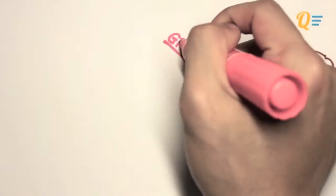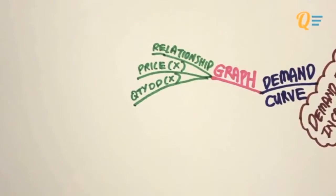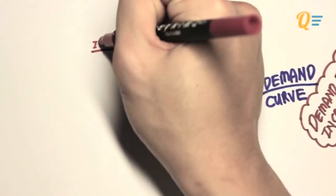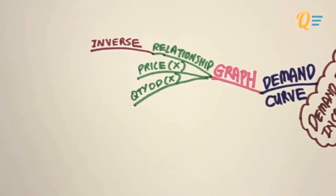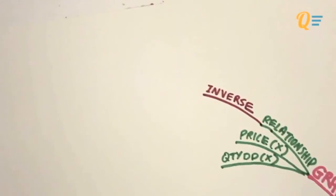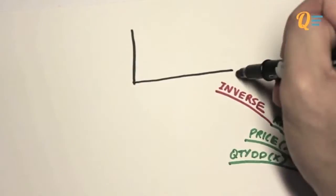What is the demand curve? The demand curve is simply a curve which shows the relationship between the price of X and the quantity demanded for good X. Typically, the relationship between these two factors is inverse. What this means is that if the price of X were to increase, the quantity demanded for good X will decrease. And this is what we call the law of demand.